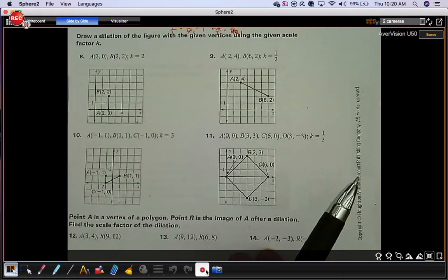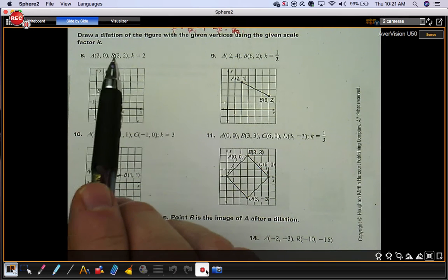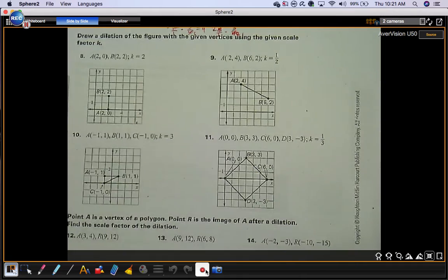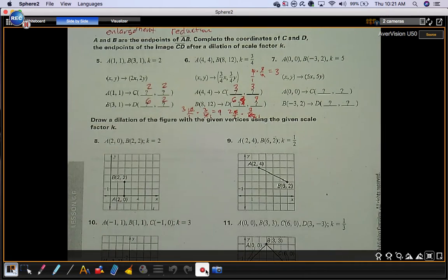Next section. Draw a dilation of the figure with the given vertices using the scale factor of K. So here's point A and point B. They have them plotted and connected. So you have a segment and they give you a scale factor. You're basically doing the same thing that you just did up here, except now you're going to graph it.